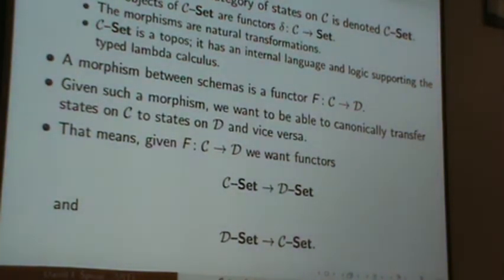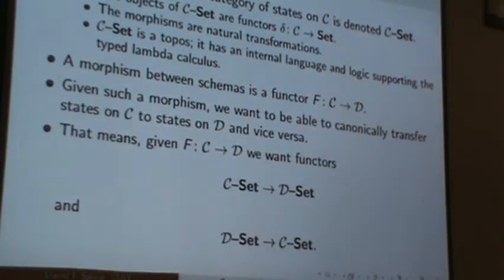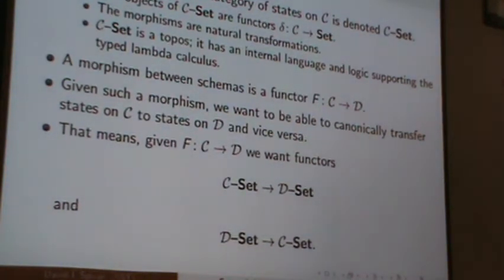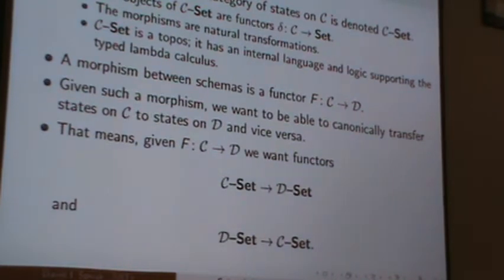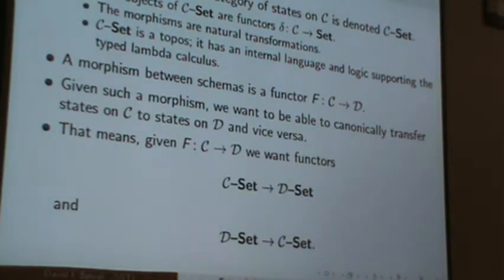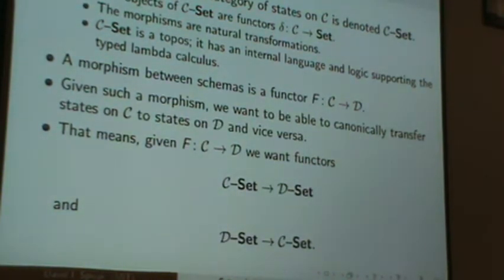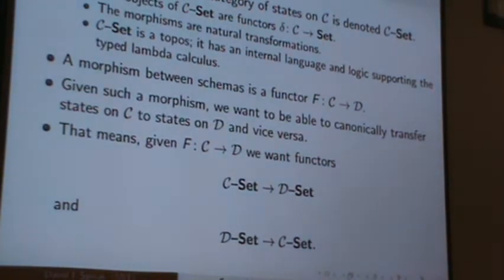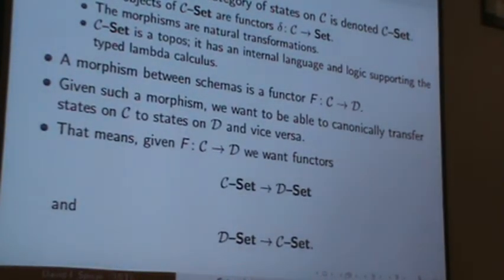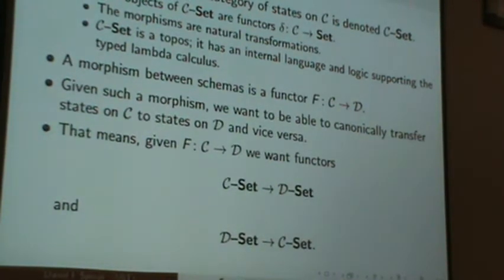Alright, so now we talk about these migration functors I was saying something about. So given a category C, as I said... Well, the category of states on C is known as C-Set. So the objects in C-Set are database states on C. And the arrows in C-Set are called natural transformations. And what that means is that you have a table for every object in your category. I have a table for every object in your category. And there's kind of a map from the rows of yours to the rows of mine that makes all the data... preserves all the data. So C-Set is called a topos. In particular, it has exactly the same kind of logic as I was just describing in the last talk, where it's not necessarily Boolean. But it does have an internal language and a logic supporting the type of lambda calculus automatically. And a morphism... Okay, that's just kind of a nice thing.